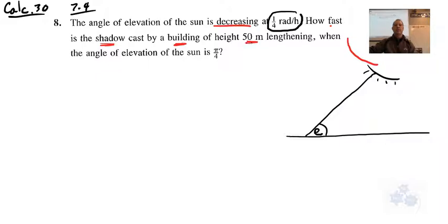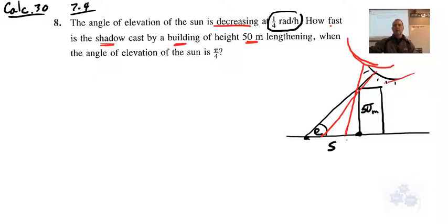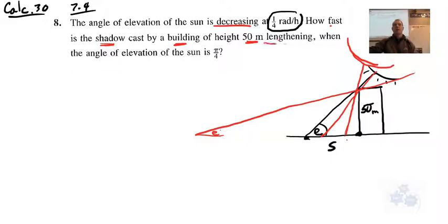How fast is the shadow cast by a building of height 50 meters lengthening? There's a shadow here, so let's make a building that is 50 meters tall. The shadow goes from the base of the building to the tip of the shadow — that would be s. When the sun is higher the shadow is small; as the sun comes down the shadow lengthens. So the angle of elevation is decreasing but the shadow is lengthening.